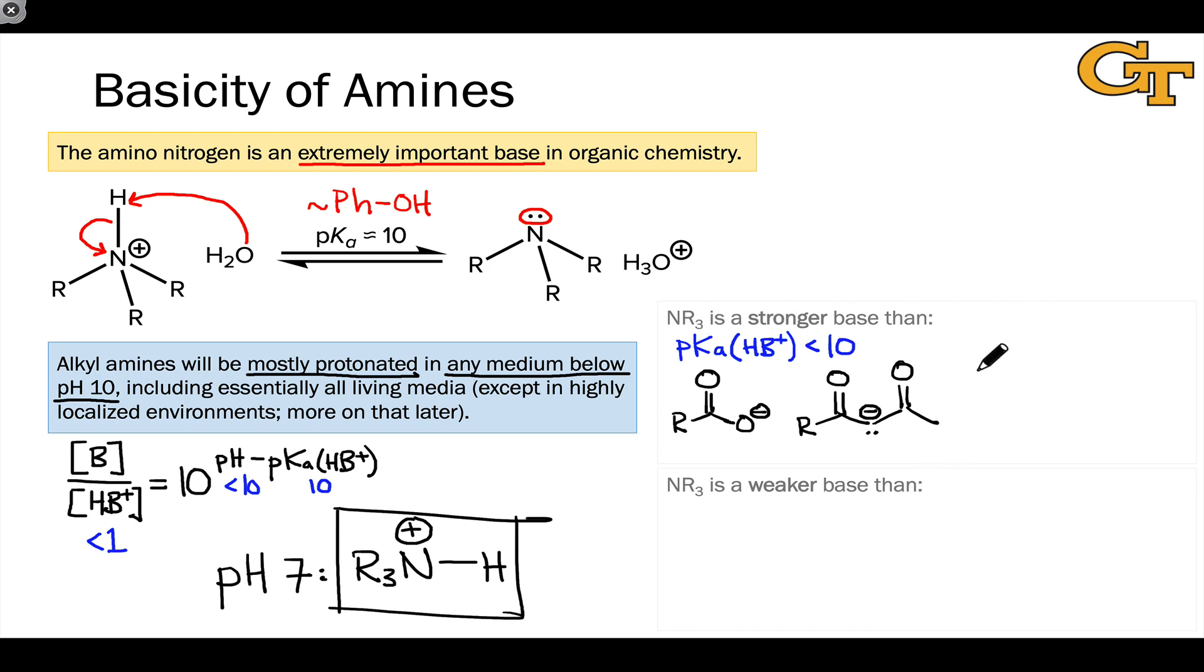And of course, also in this box, we have the usual suspects, the conjugate bases of strong acids, things like Cl minus, HSO4 minus, SO42 minus, the other halide anions like I minus and Br minus. These are all the conjugate bases of strong acids, and so they're very stable and very weak bases. At the end of the day, NR3 is still neutral.